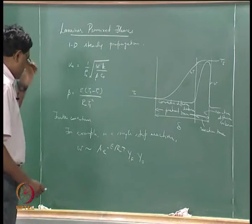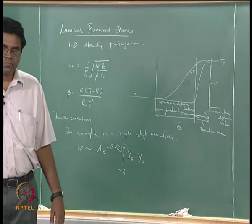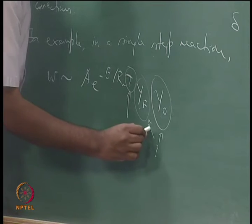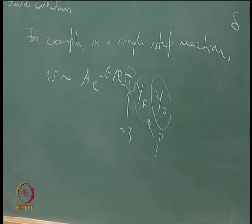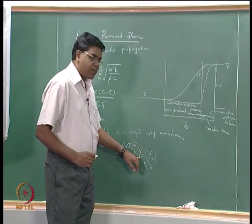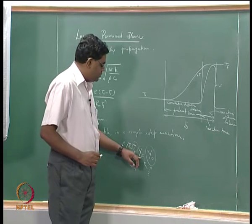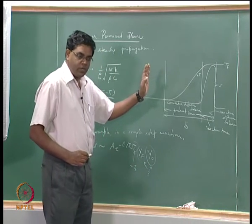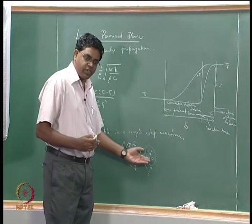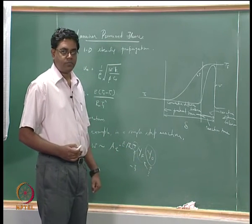It is reasonable to assume we can plug in T_f for the temperature in the Arrhenius expression. But what values of Y_F and Y_O do we use? The first thought is that these are the mass fractions of the reactants in the incoming stream. For a premixed mixture you have a certain mixture ratio, so there is a certain mass fraction for Y_F and a certain mass fraction for Y_O, and that is what we should use.